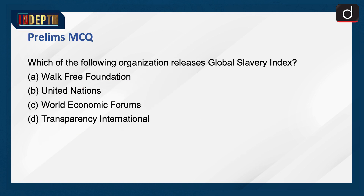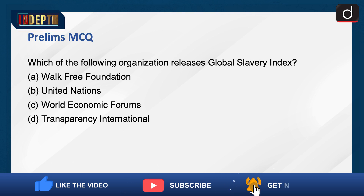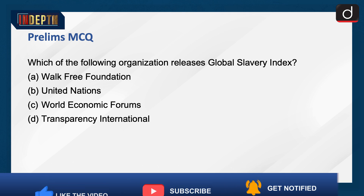Practice question: Which of the following organizations releases the Global Slavery Index? (A) Walk Free Foundation, (B) United Nations, (C) World Economic Forum, or (D) Transparency International?